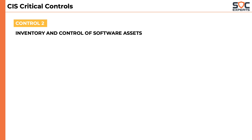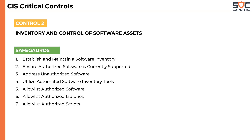The second control talks about maintaining an inventory of software assets, which includes operating systems and applications. It has seven safeguards that talk about listing down authorized applications and preventing unauthorized applications from installing and running in the network.